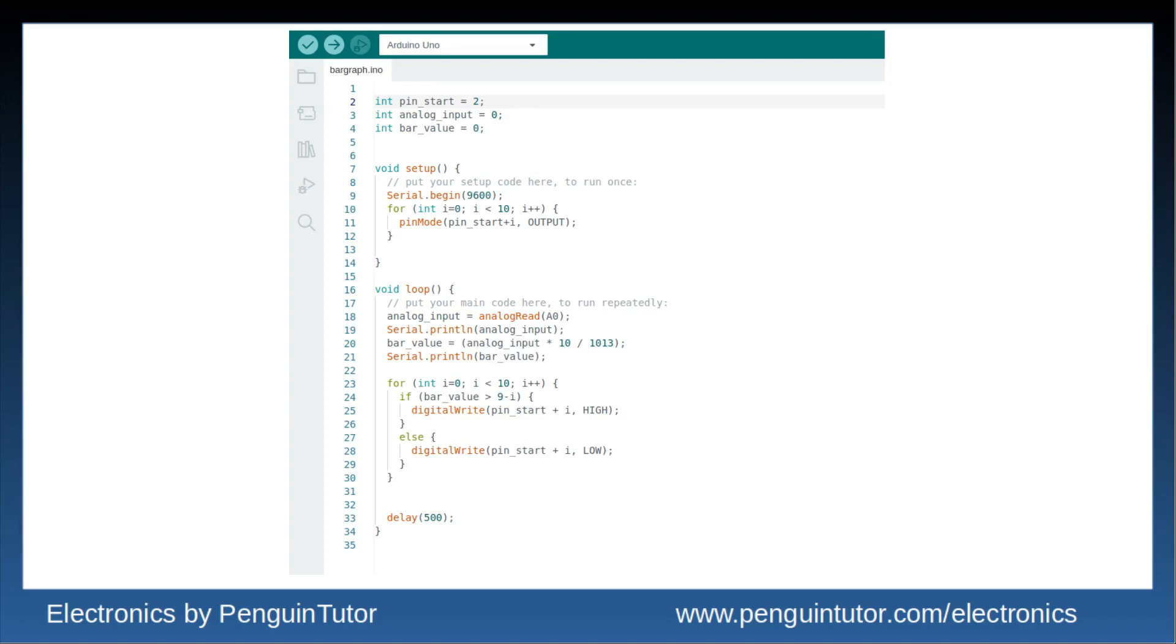The code for the Arduino determines which outputs to turn on based on the analog input value, which turns on the appropriate LEDs. The code is written in C++, and is available to download from the PenguinTutor website. See the video description for more details.